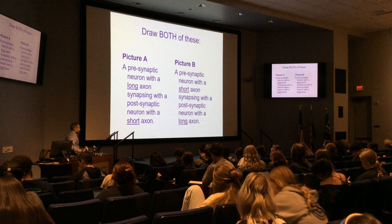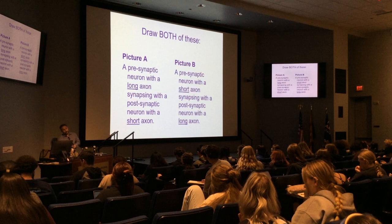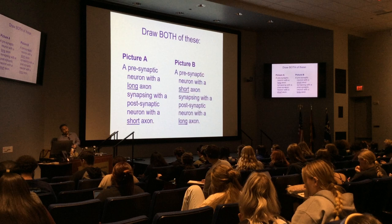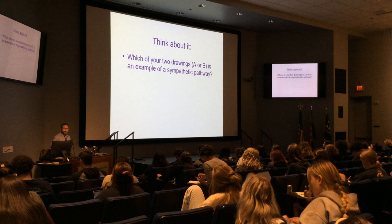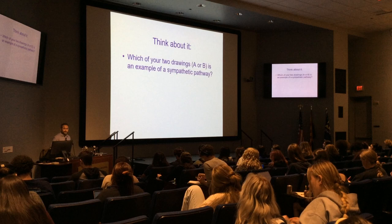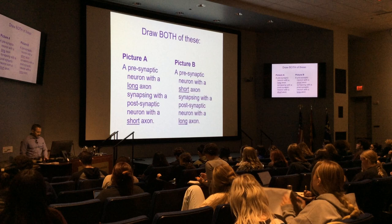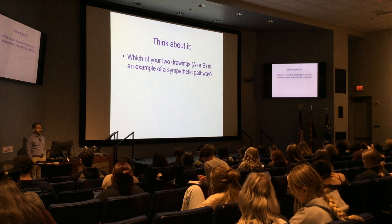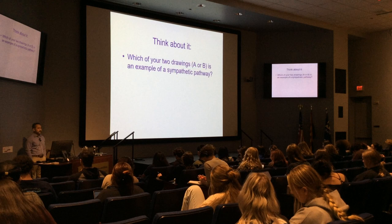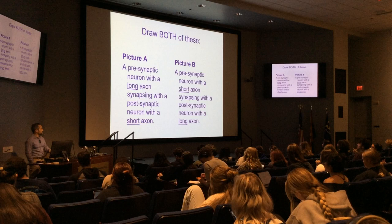Did anybody look ahead or prepare for today? Some of this stuff is a little abstract, a lot of memorization. So I'm going to pose the question: of your drawing A or B, which one is an example of a sympathetic pathway — long/short, or short/long? A sympathetic pathway is typically short, long — picture B. So a sympathetic pathway has a relatively short pre-ganglionic fiber and a relatively long post-ganglionic fiber.